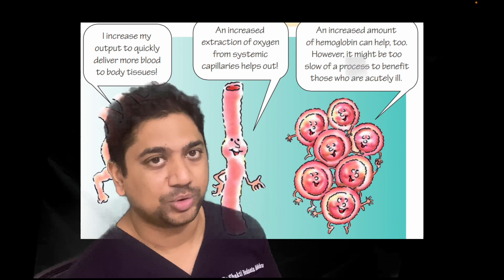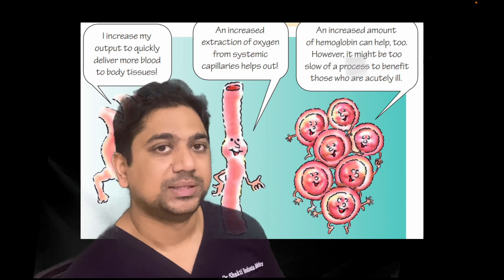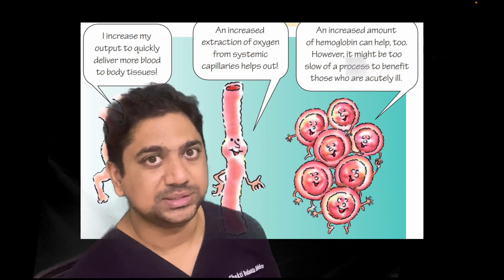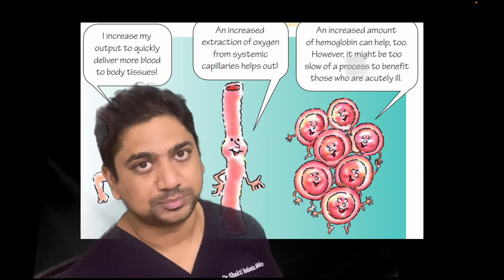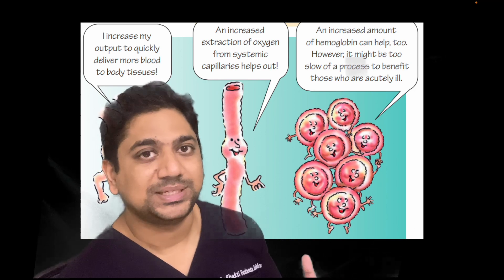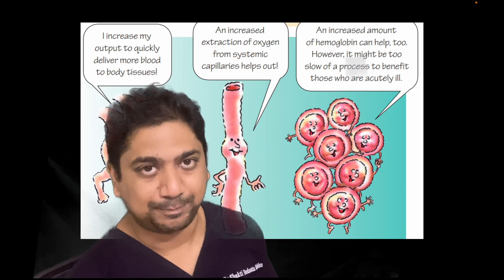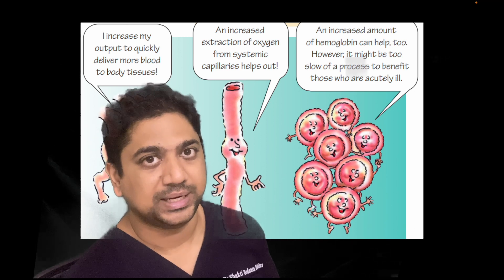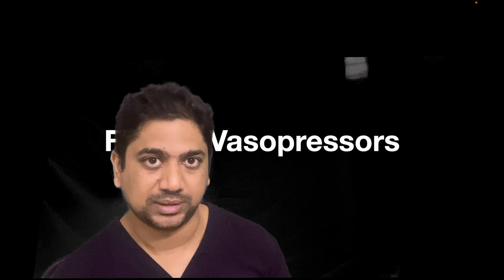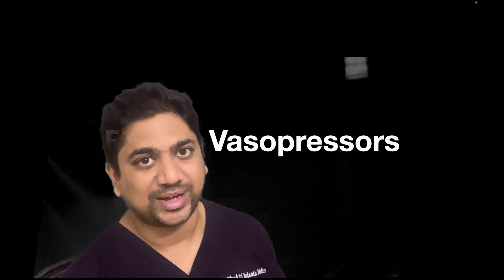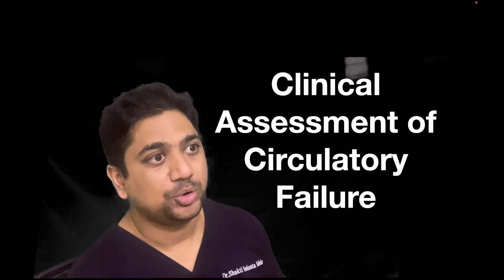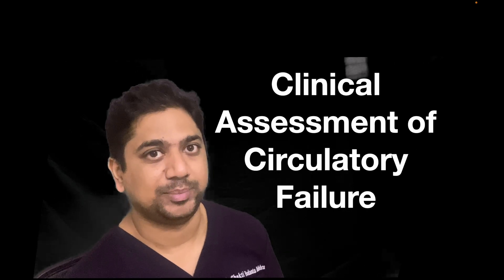Whenever there is circulatory failure, the body tries to compensate through three mechanisms: the heart pumps more rapidly with greater cardiac output, the tissues extract more oxygen, and hemoglobin can increase with more RBCs to deliver more oxygen at the tissue level. However, all these compensatory mechanisms have limitations and take time. Once they are no longer applicable, the patient goes into frank circulatory failure, at which point we give fluid or vasopressors.